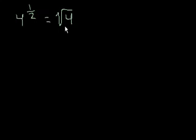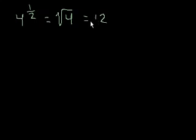Another way to think about it: what times itself is equal to 4? We know that the square root of 4 is 2. It could actually be a positive 2 or a negative 2, because either of those numbers, when they're squared, could equal 4. But for the sake of this one, we'll assume it's always the positive square root. So 4 to the 1 half is equal to 2.